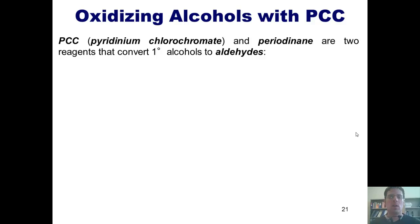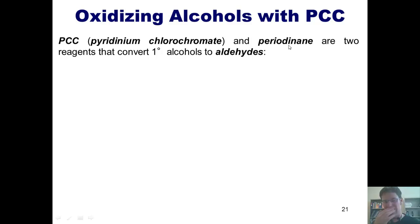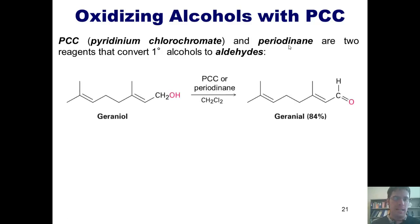Here are some typical reagents that we use to do oxidations. One of them is called PCC, which stands for pyridinium chlorochromate — you don't have to remember that name. There's another reagent called periodinane. They are two reagents that can convert primary alcohols into aldehydes, as shown here.